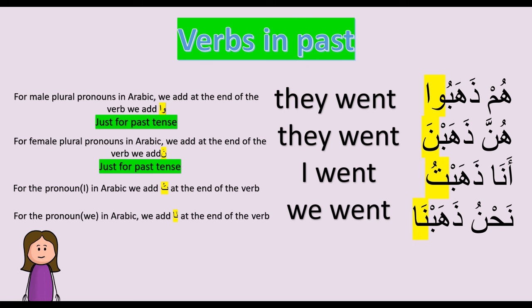How to say 'they went' in Arabic for male? We say: هم ذهبوا. This is a voiced waw at the end of the verb. The waw and alef (وا) refer to plural pronouns for male in the past tense. Repeat: هم ذهبوا.